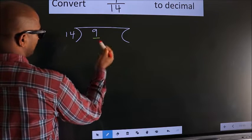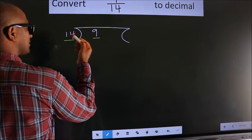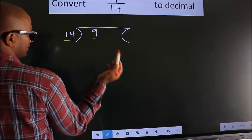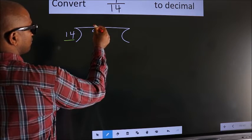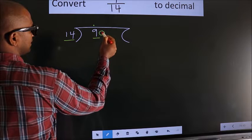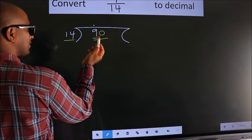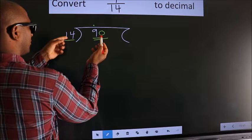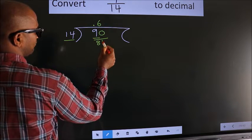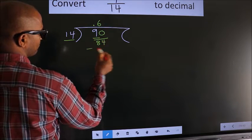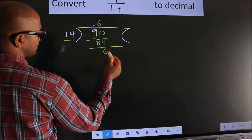Here we have 9, and here 14. 9 is smaller than 14, so what we should do is put a dot here and take 0 here. So we have 90. A number close to 90 in the 14 table is 14 × 6 = 84. Now we should subtract. We get 6.